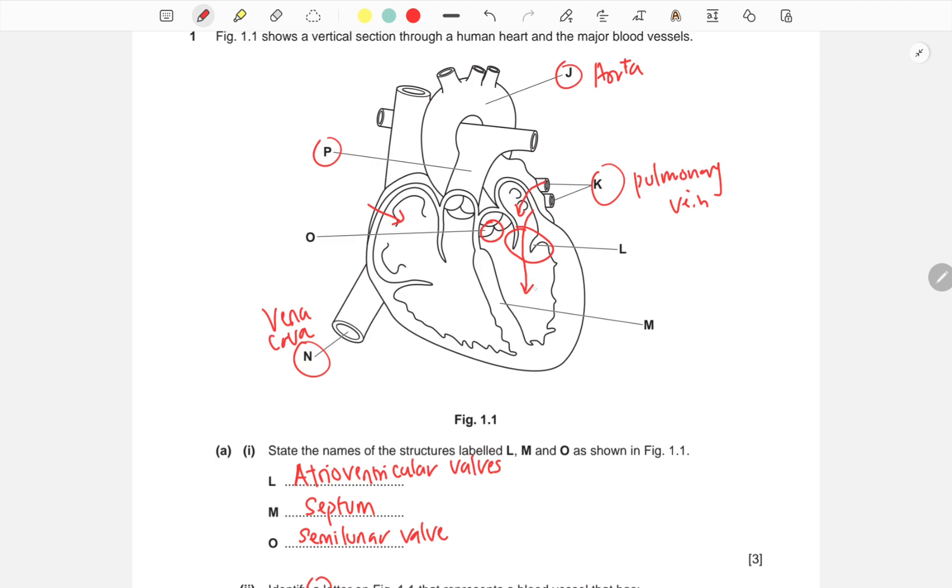Blood goes into the left ventricle as the AV valves open. Next, when the ventricles contract, the blood goes into the aorta as the semilunar valves open, and the AV valves will close.